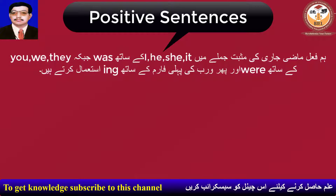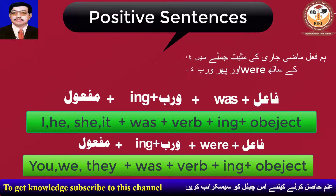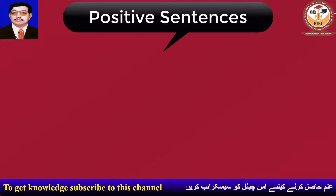He, she, it ke saath 'was' jabke you, we, they ke saath 'were' aur phir verb ki pehli form ke saath -ing mila ke istaymaal karte hain.